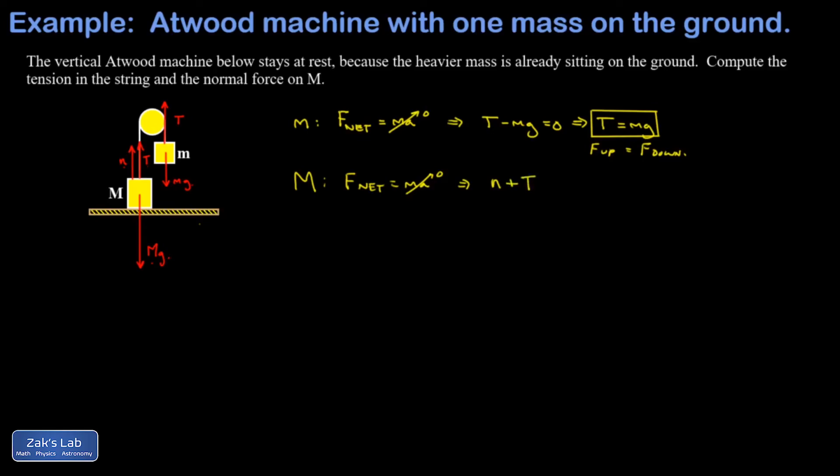and T. So I'm going to count those both as positive, and then big Mg, the force of gravity, I'll count as negative. And this better sum to zero. And what I'm after here is the normal force, so just solving for that I add Mg to both sides and subtract T from both sides, and I replace T with